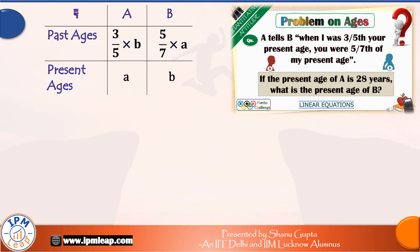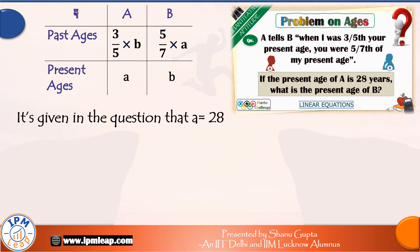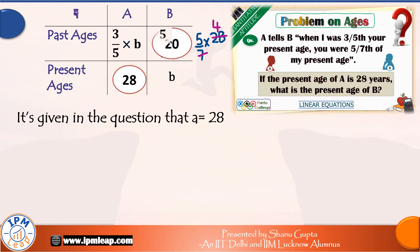Now we are just one step away from our answer. Since the present age of A is 28, we substitute the value of A in this table as 28 and let us see what we get. This is 28, and this is five-by-seven into 28. Seven fours are 28 and five fours are 20. So this means at that time in the past, B was 20 years of age.